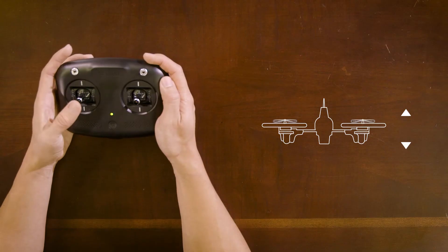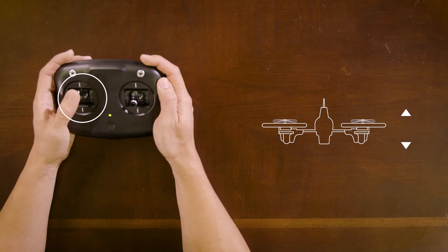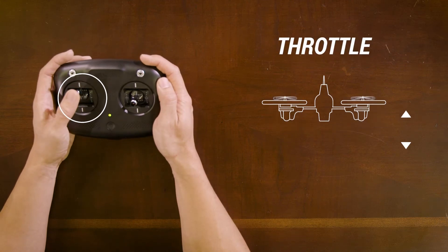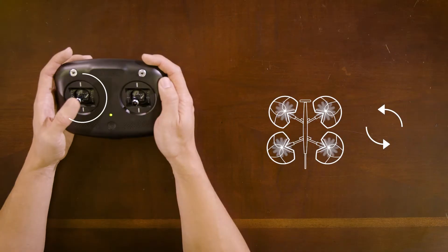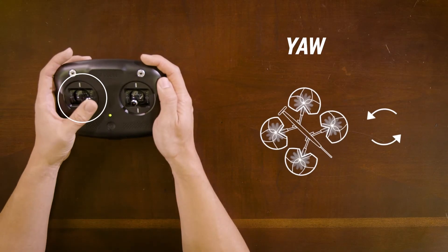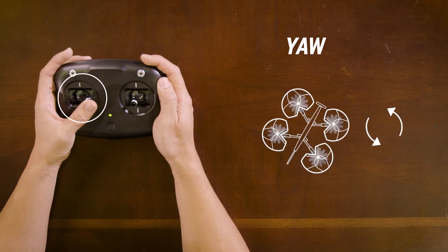Once your quad is armed, the left stick moving up and down will control throttle. That's your elevation for your quad. Moving the stick to the left and right will control yaw or spin. I don't recommend playing with yaw too much until you're comfortable with basic flight maneuvers.